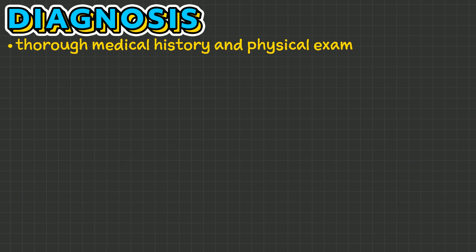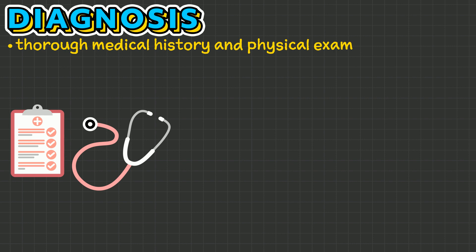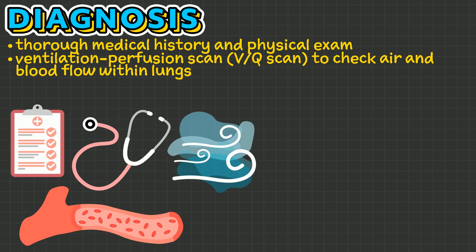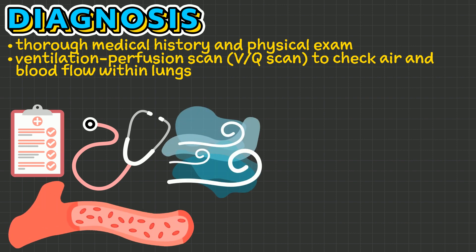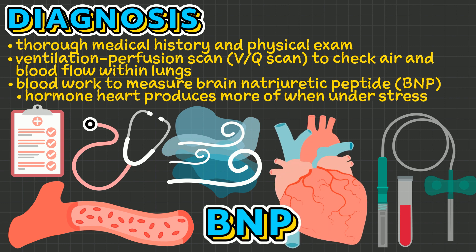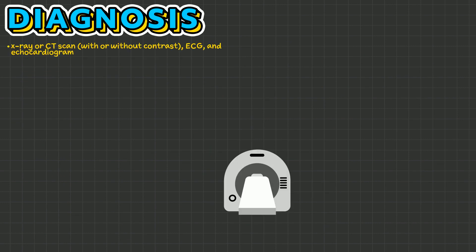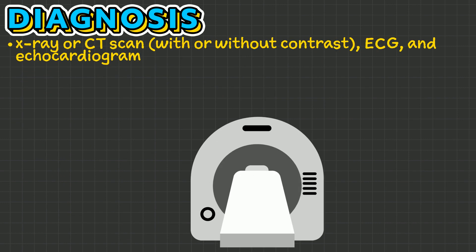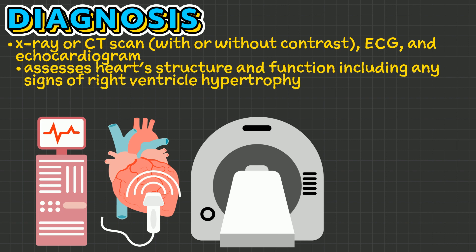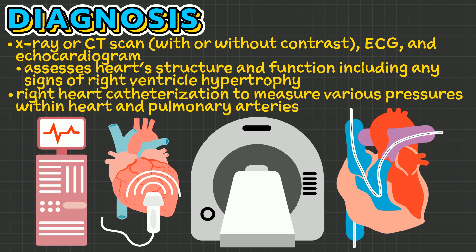To diagnose cor pulmonale, a thorough medical history and physical exam is completed, along with a ventilation perfusion scan, also known as a VQ scan, to check air and blood flow within the lungs, and blood work to measure brain natriuretic peptide, also known as BNP, a hormone the heart produces more of when under stress. An x-ray or CT scan with or without contrast, an ECG, and an echocardiogram may be completed to assess the heart's structure and function, including any signs of right ventricle hypertrophy. A right heart catheterization may also be performed to measure various pressures within the heart and pulmonary arteries.